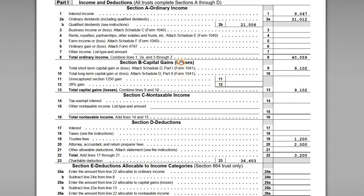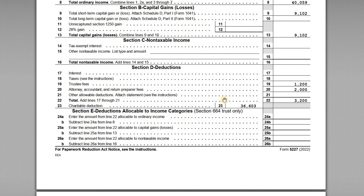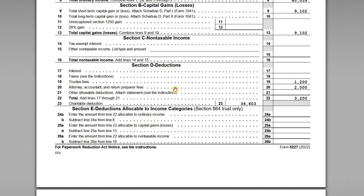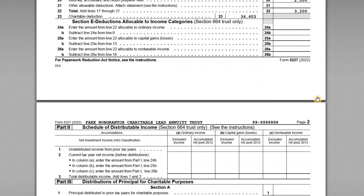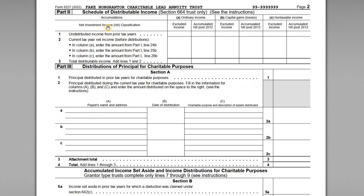Section D covers deductions — trustee fees, attorney and accountant fees, and the $36,603 charitable deduction claimed on the 1041. Section E, deductions allocable to income categories, says 'Section 664 trust only.' Section 664 trusts are the charitable remainder trusts, and we have a lead trust, so we don't have to do that section. Part 2, Schedule A — distributable income — is also for charitable remainder trusts only, so we skip it for a lead trust.